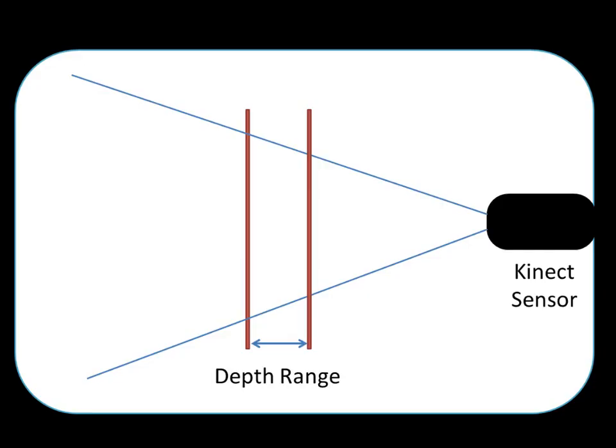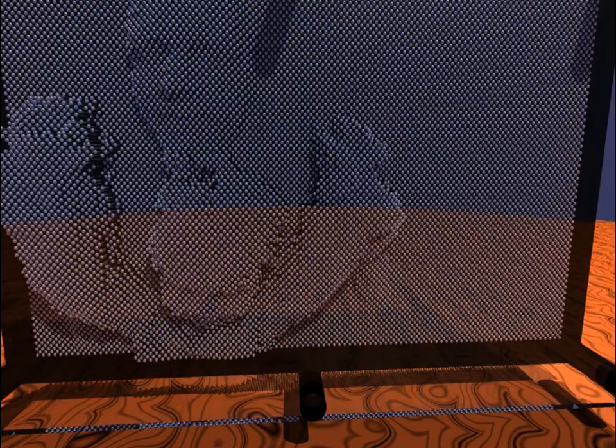Now, using the Kinect sensor and selecting a depth range, I can actually use the Kinect depth data from myself to actually animate myself and project myself onto the pinboard. This is a depth image that's come from Kinect of my daughter and I. This is what happens when we use that depth image from Kinect to actually set the depth of the pins in the pinboard.